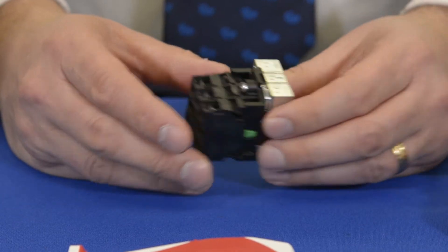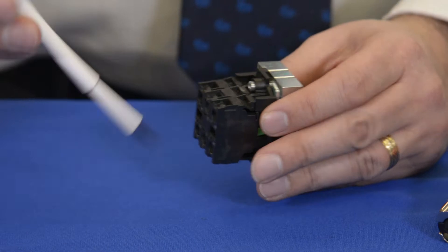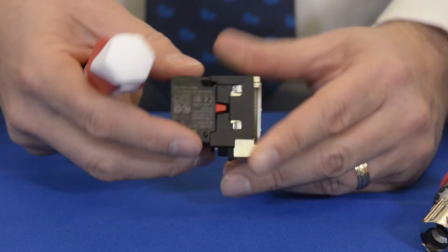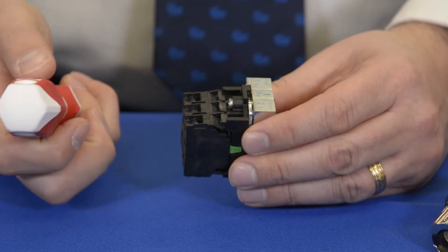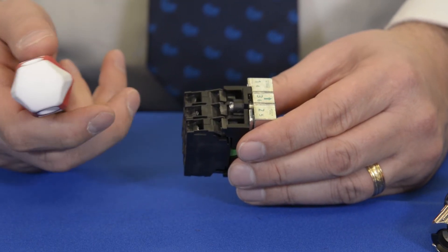But for now, I'd like to show you how to remove the contact blocks and then how to replace them. If you look at these, there's a small end and a wide end. The wide end is going to go at the top of the latch mechanism and the small end is going to go at the bottom.